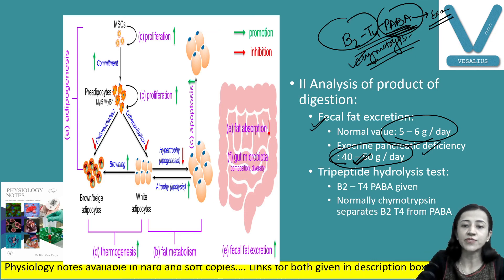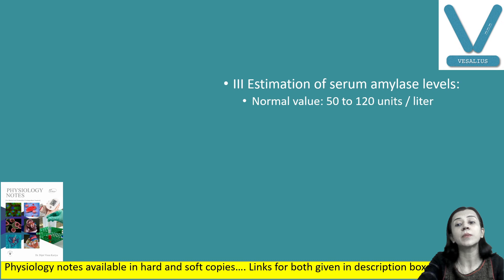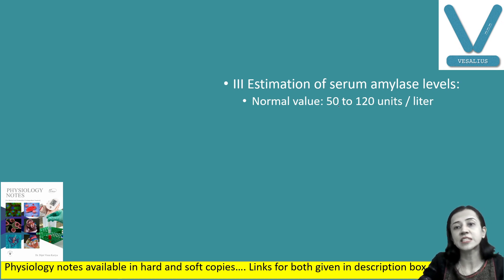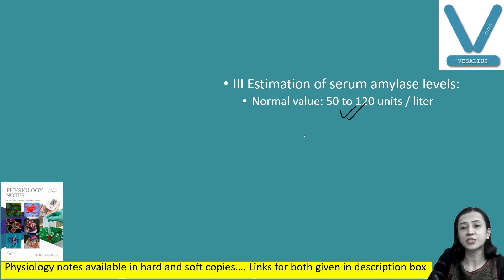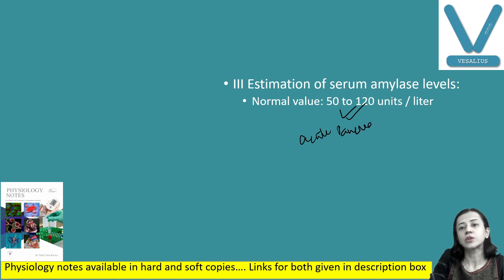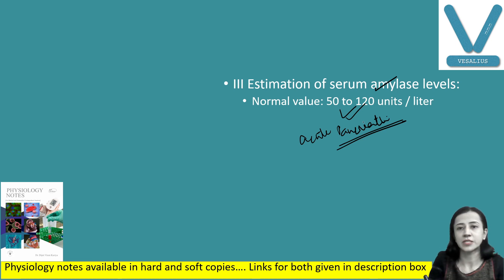The third variety of test is estimation of serum amylase level. The normal value of serum amylase is 50 to 120 units per liter. This level is commonly increased in patients with acute pancreatitis. So to diagnose acute pancreatitis, the level of serum amylase is estimated.